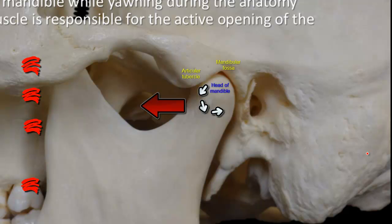Opening of the mouth is either passive, produced by gravity — the simple hinge-like movement that happens when the jaw falls during sleep — or active, as in yawning, which is mainly produced by active contraction of a muscle: the lateral pterygoid muscle.